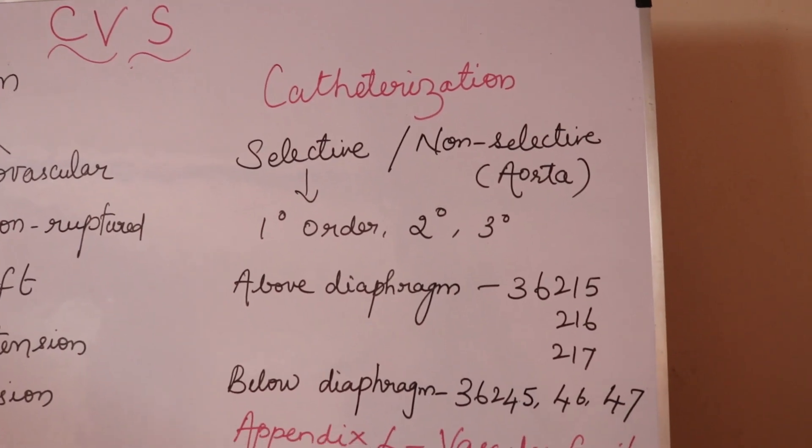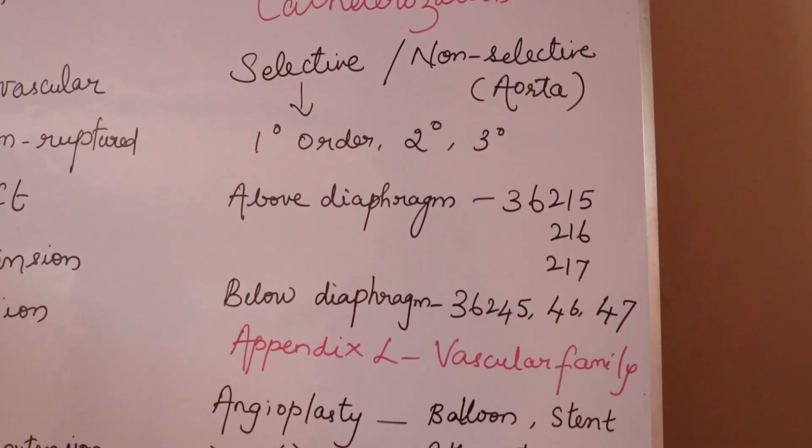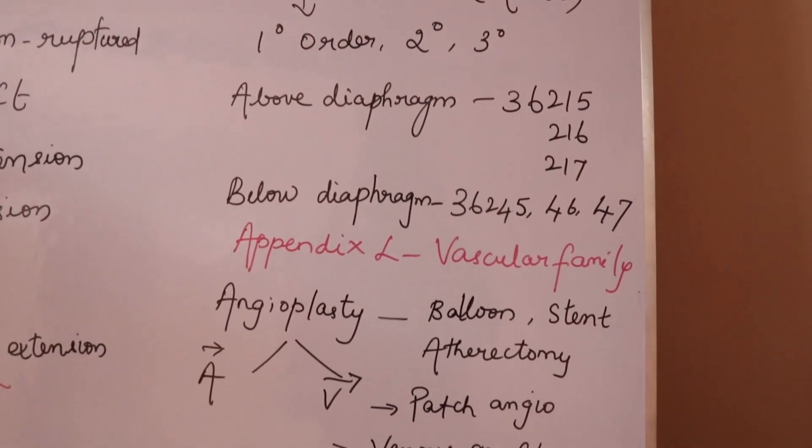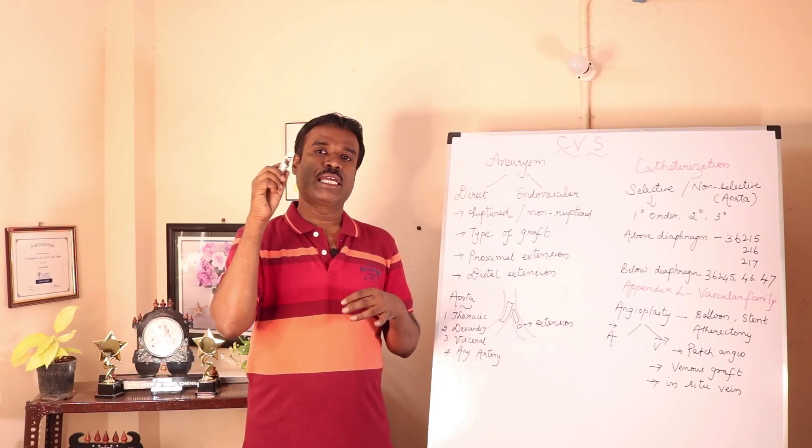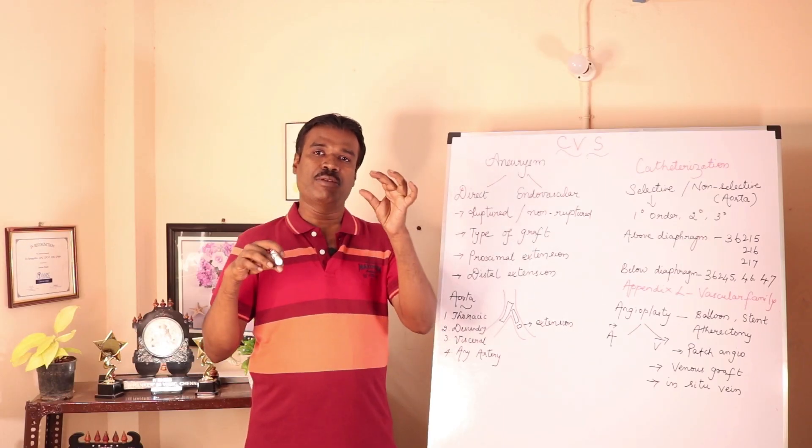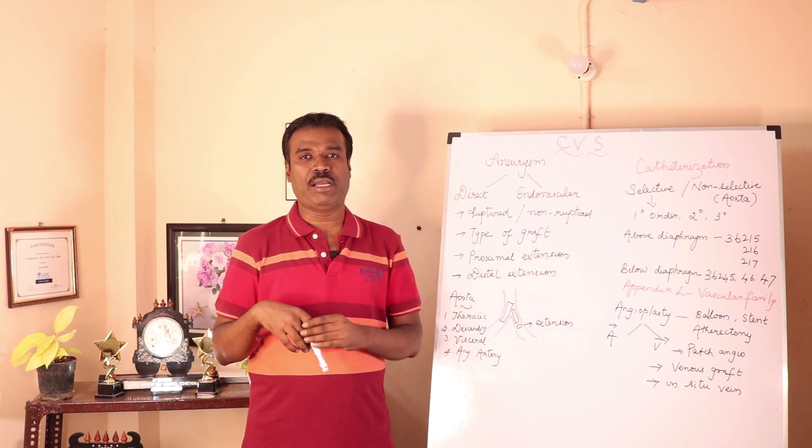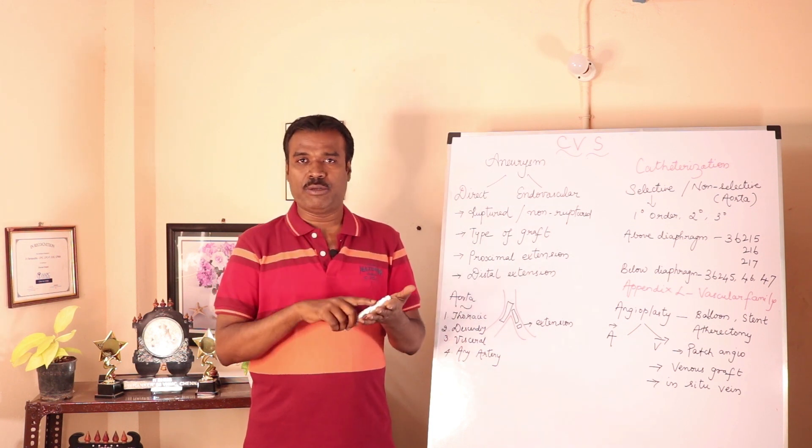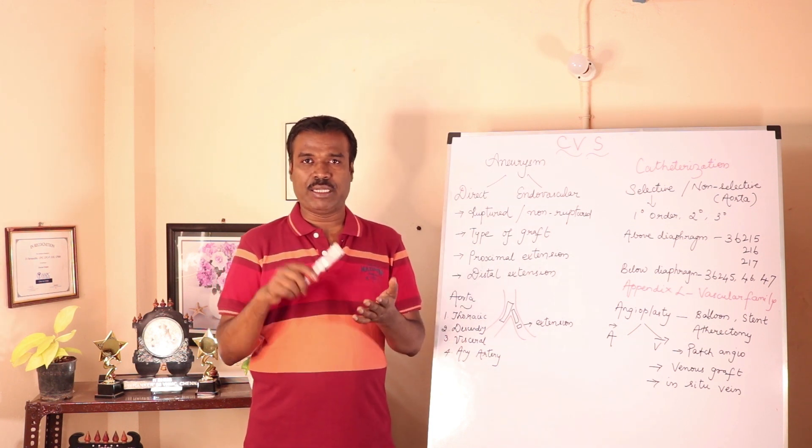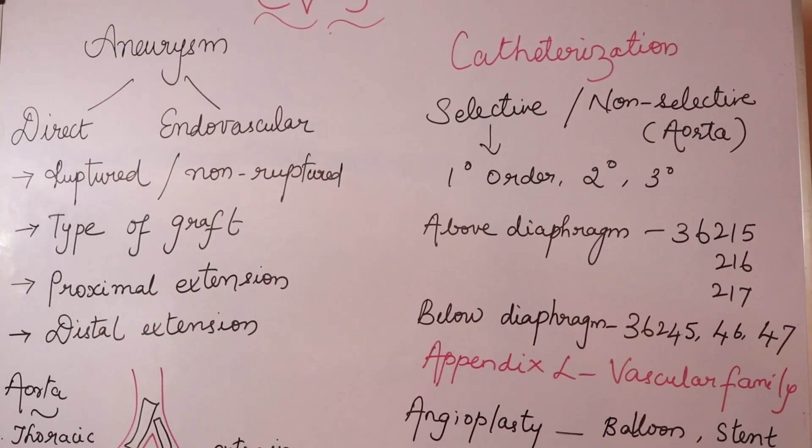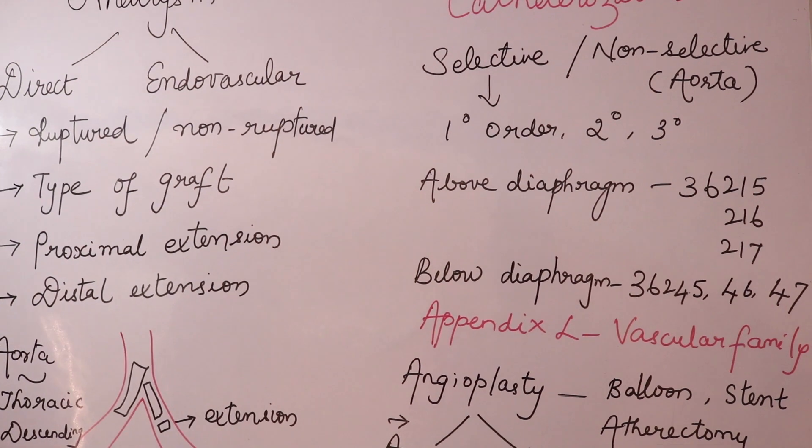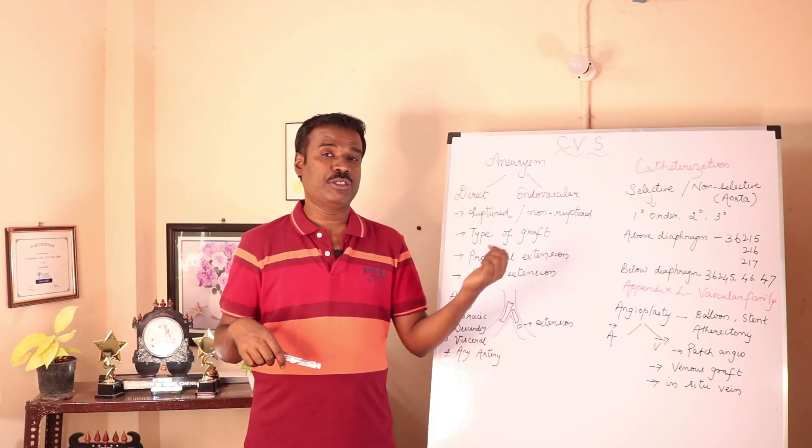So they do a trans-luminal angioplasty and then the physician keeps a stent which helps in the dilatation of the blood vessel. When angioplasty and stent is performed in the same vessel, you will have to report only the stent placement because stent includes angioplasty.